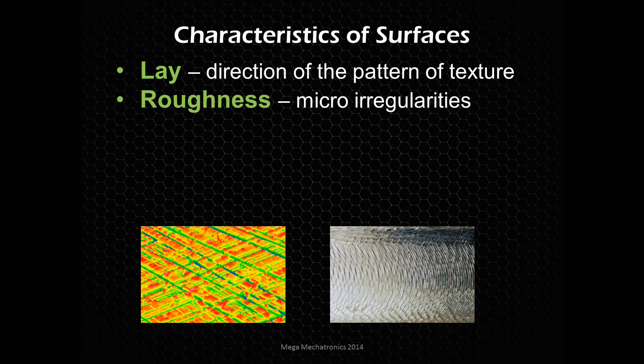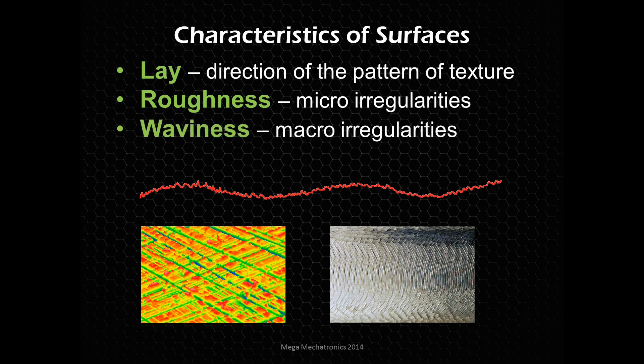And then we have roughness — these are the micro irregularities. So the very small bumps you see in that red line would be something like roughness. But then that's combined with waviness, and these are the macro irregularities — that sort of wave pattern that you can see between the micro irregularities and the macro irregularities.